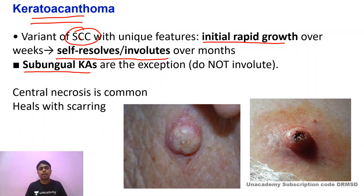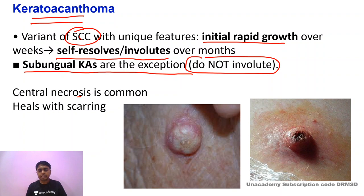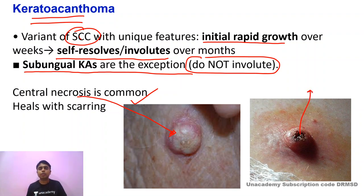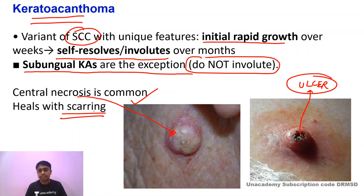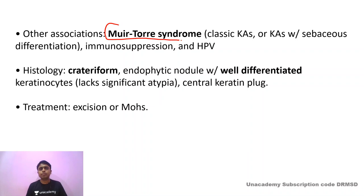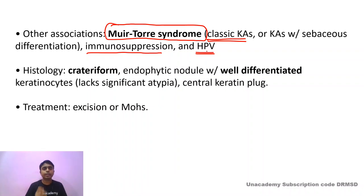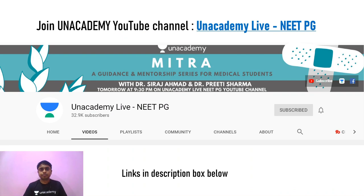Subungual carcinomas are exceptions — they do not involute. Central necrosis is very common in keratoacanthoma; contents get extruded forming an ulcer, and since ulcers are at dermal-level depth, these lesions heal with scarring. Muir-Torre syndrome is associated with keratoacanthomas. Immunosuppression or HPV can also be associated with keratoacanthomas. Treatment is excision with Mohs micrographic surgery.